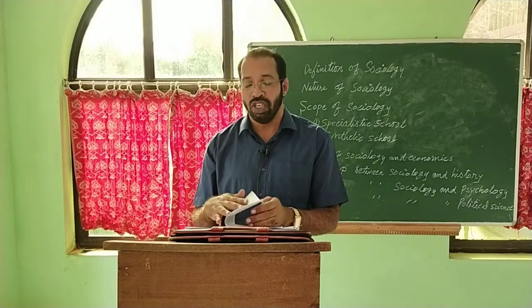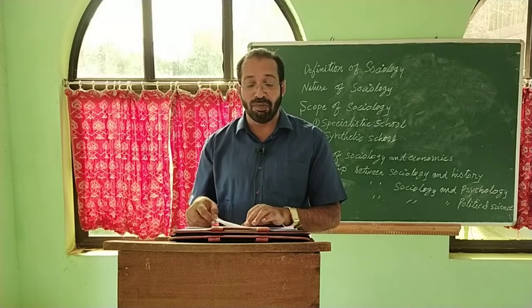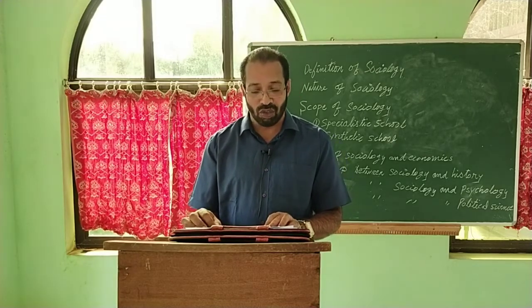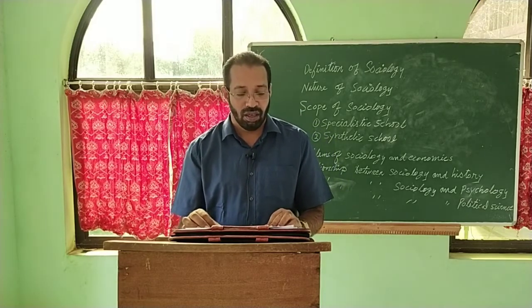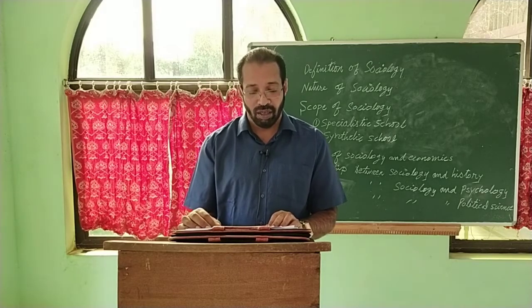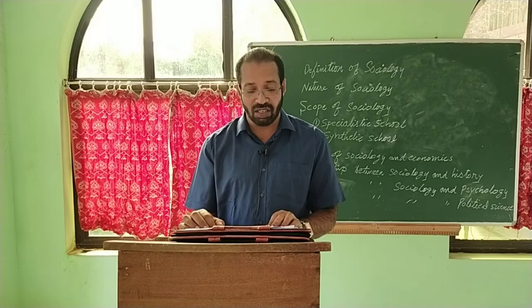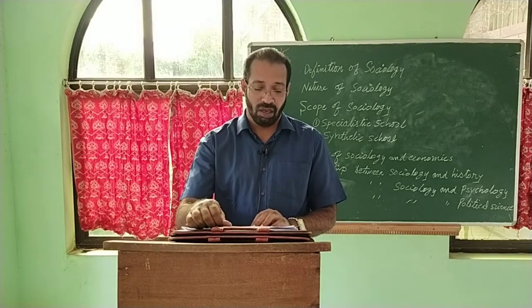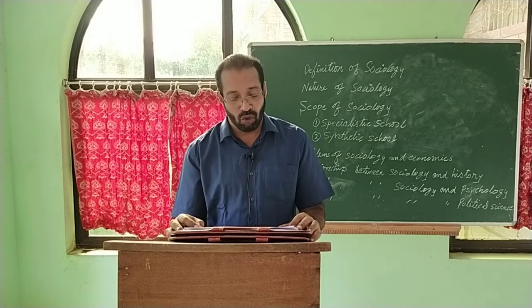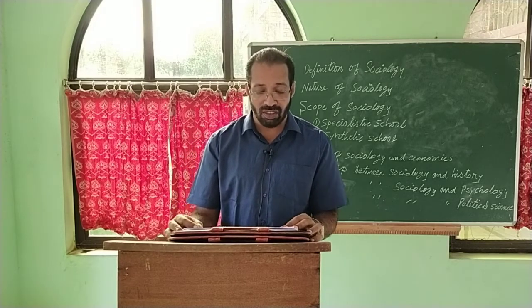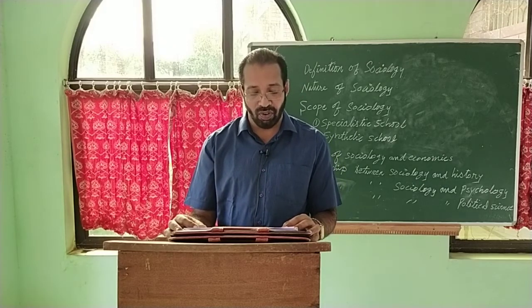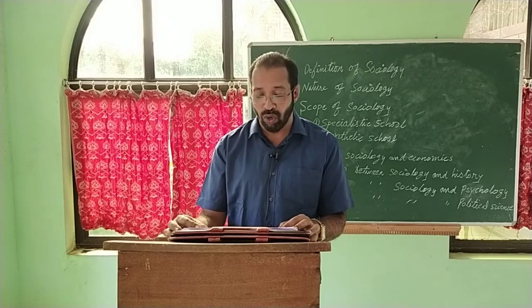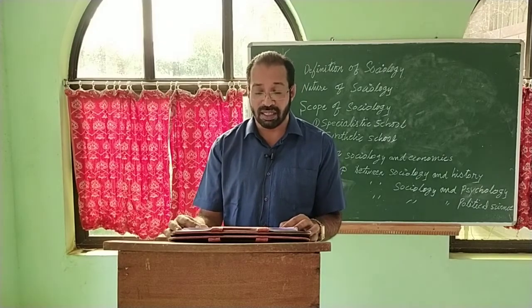What do you mean by sociology? It is a systematic approach to thinking about, studying and understanding society, human social behavior and social groups. It is the scientific study of society including patterns of social relationship, social interactions and culture. Sociology as a branch of knowledge has its own unique characteristics. It is different from other sciences in certain aspects, and an analysis of its internal logical characteristics helps one to understand what kind of science it is.